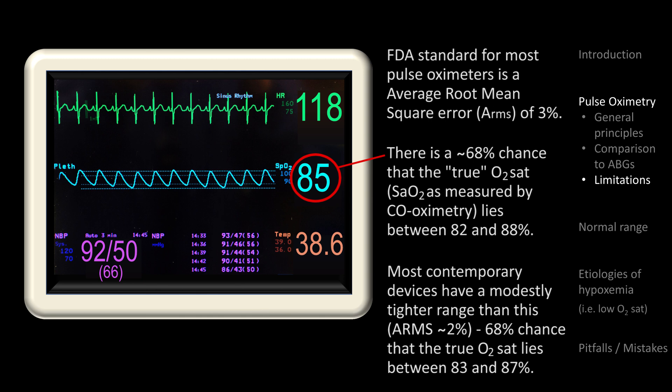Part of this error is systematic bias in one direction, which tends to remain relatively stable in a given patient, such that using the pulse oximeter to follow short-term trends in oxygenation will lead to more sound management decisions compared to making decisions based on a one-time value considered in isolation.